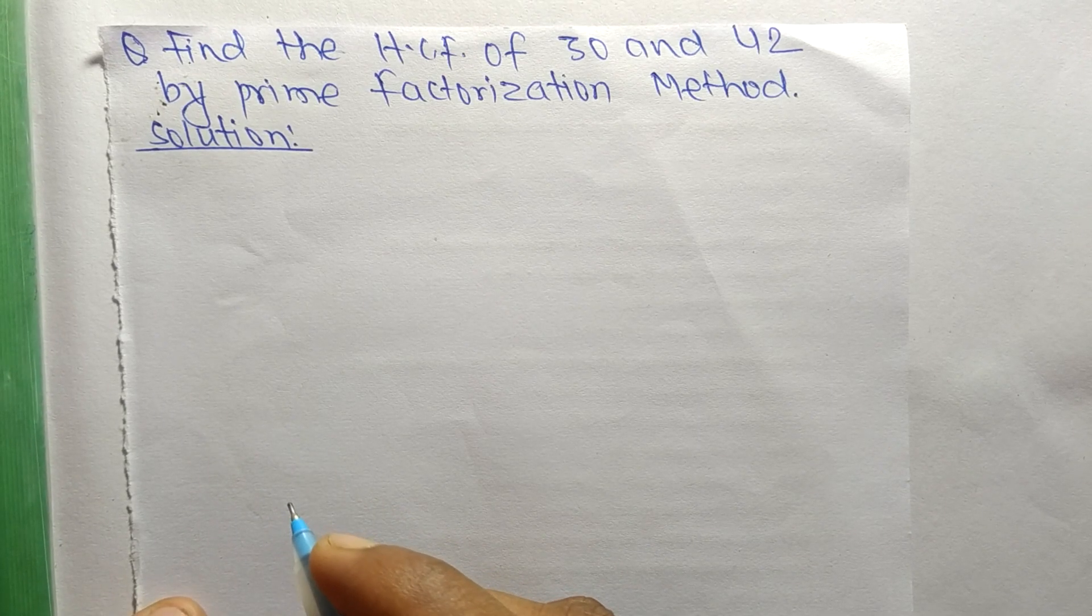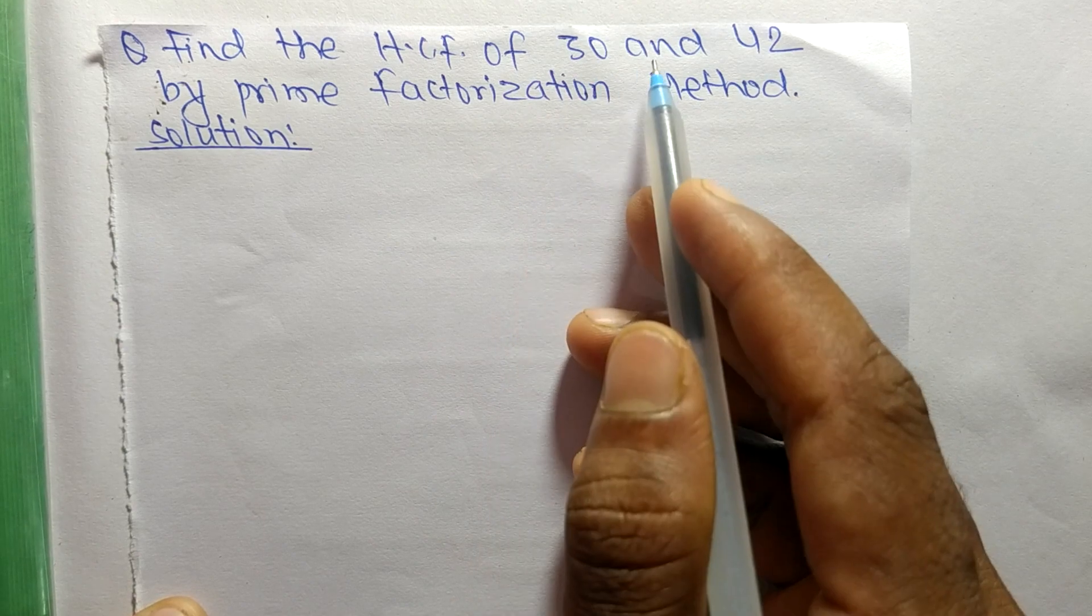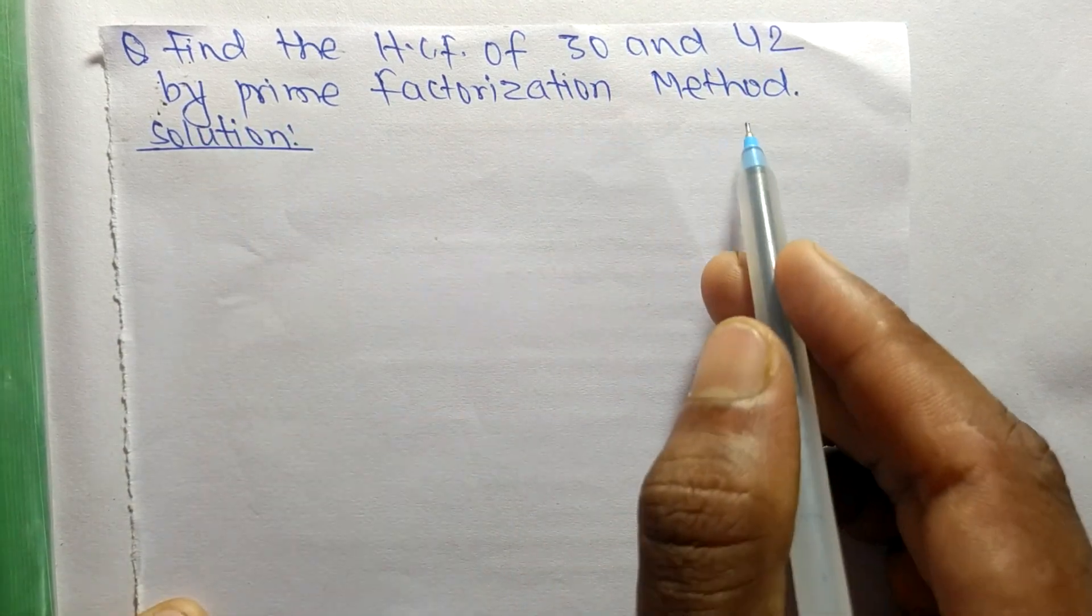So today in this video we shall learn to find the HCF of 30 and 42 by prime factorization method.